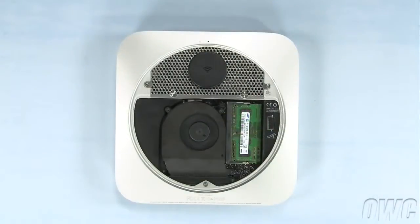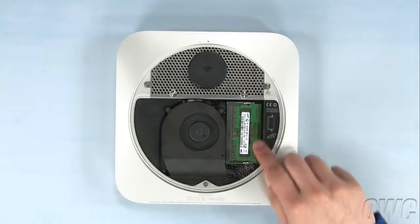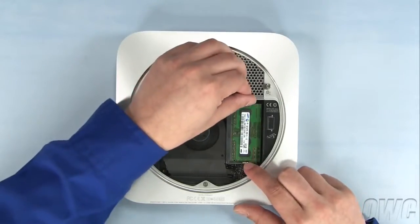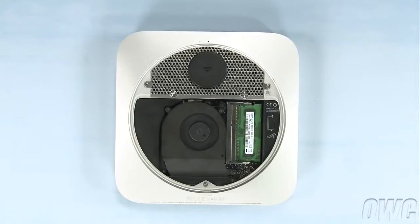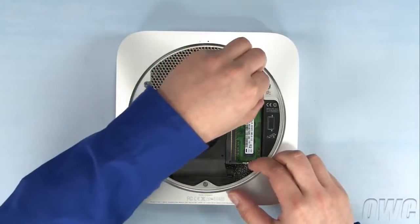The memory modules are located here. To remove them, gently push outward on the retaining clips until the top module pops up. Then, gently pull it straight out. Repeat the process for the lower module.